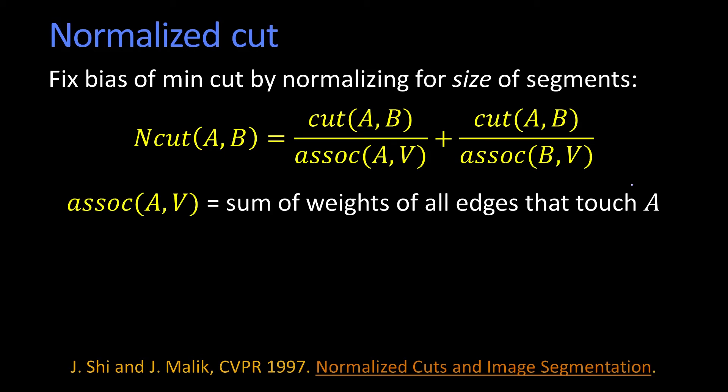So normalized cuts fixes this bias that MinCut has of wanting to pull off these little elements. The way it does it is it's going to propose a cut, and it has the traditional measure of cutting A and B, but it's normalized by the association within A and the association within B. A simple way of thinking about it is the association is just how well connected, summed over all of the nodes within a segment, how well connected those points are.